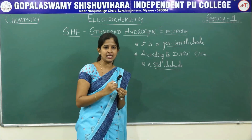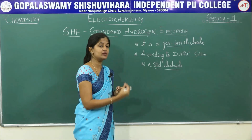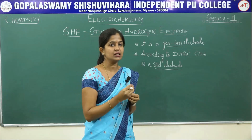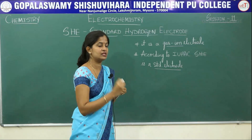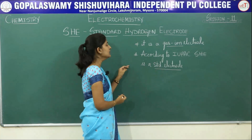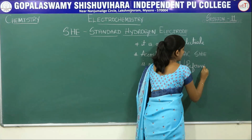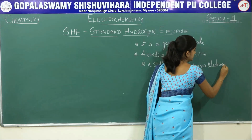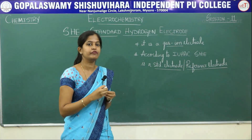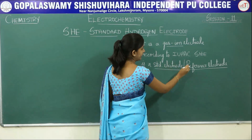Say the electrode potential of zinc is X. It means that with reference to this SHE, that is the Standard Hydrogen Electrode, the value of electrode potential of zinc is X. So like this you are referring to your standard electrode. Hence it is also called as a reference electrode — you are referring the electrode potential of all the metals, all the electrodes, with respect to this SHE.